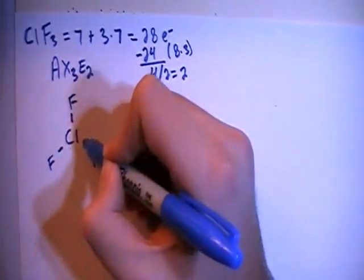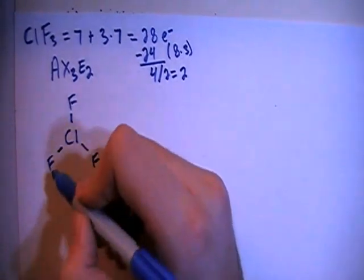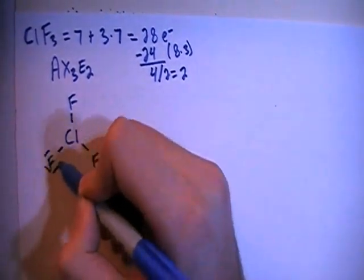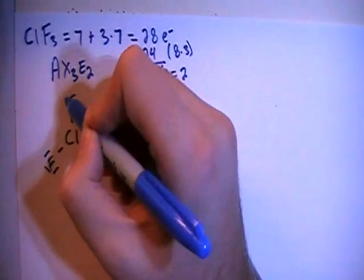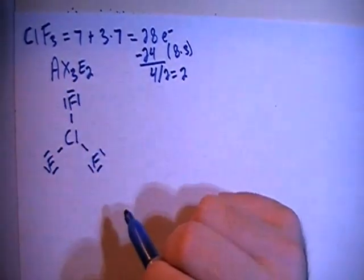And we can start by single bonding all of the fluorines to the central chlorine. So single bond there, there, and there. And we can also fill in the octets for each of the fluorines on the outside. So fill in each of these to make them have their 8 electrons.